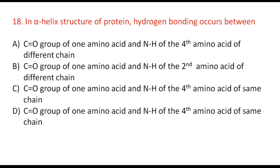Next question: in the alpha helix structure of protein, hydrogen bonding occurs between — CO group of one amino acid and NH of the fourth amino acid of a different chain; CO of one amino acid and NH of the second amino acid of a different chain; or CO group of one amino acid and NH of the fourth amino acid of the same chain? The correct answer is option C: in the alpha helix structure, hydrogen bonding occurs between the CO group of one amino acid and the NH of the fourth amino acid of the same chain.